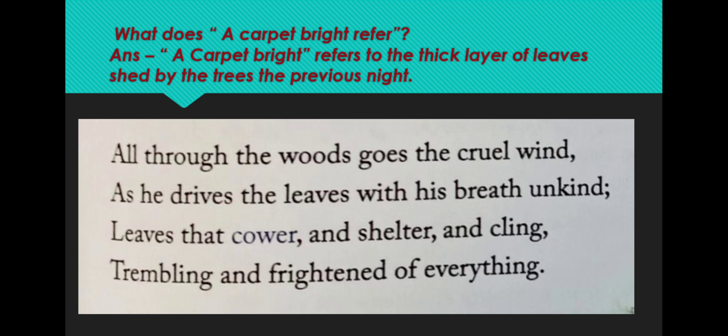All through the wood — wood means forest — a cruel wind is blowing. What is this cruel wind doing? This cruel wind is driving away the leaves. The words cower and shelter and cling, trembling and frightened, give the impression that the leaves are falling and they are terrified.